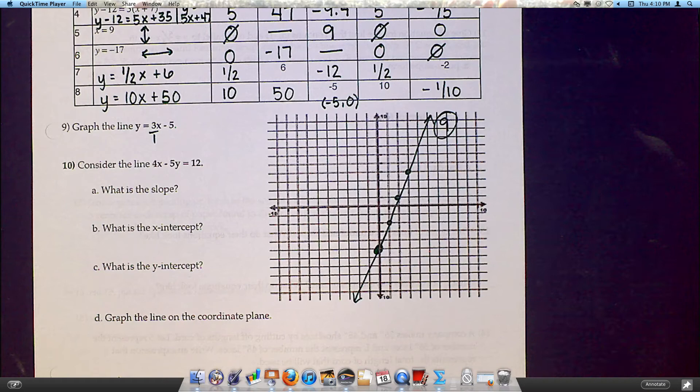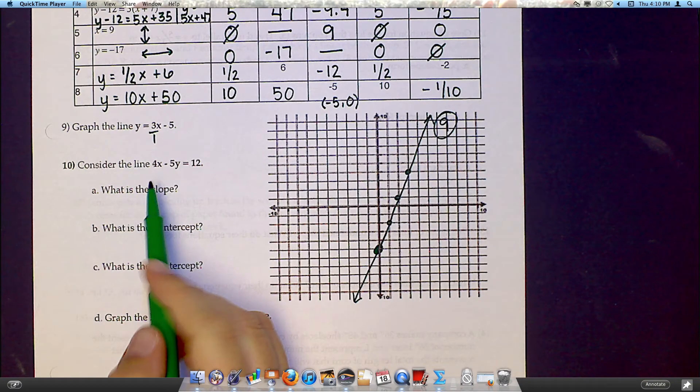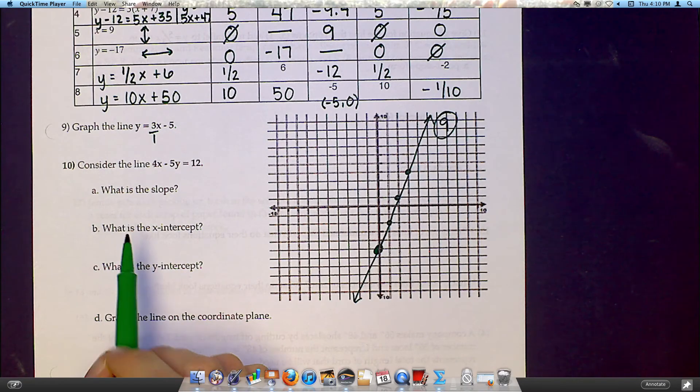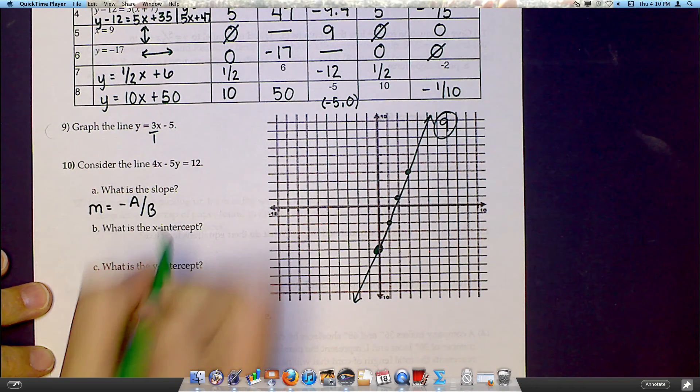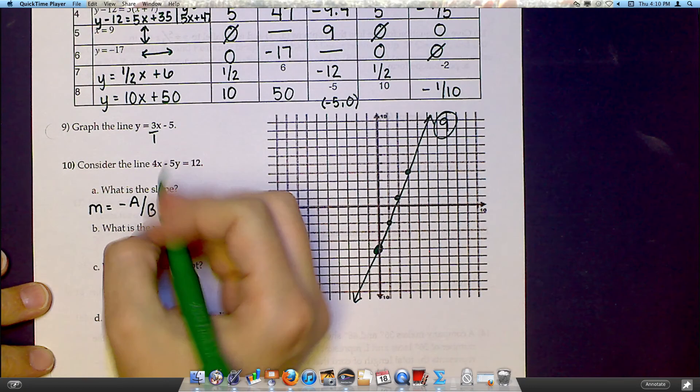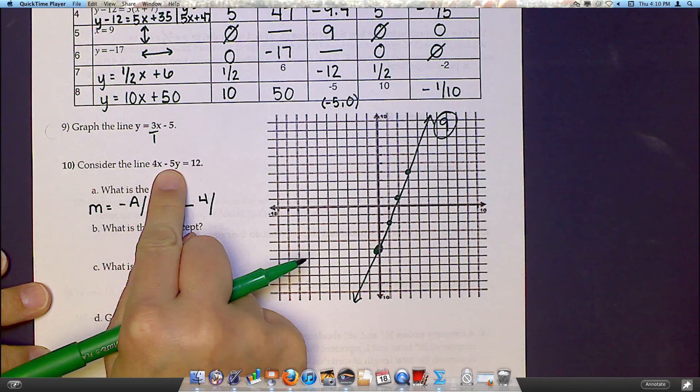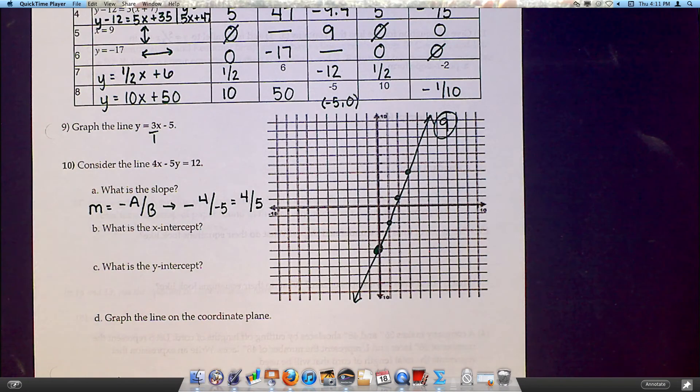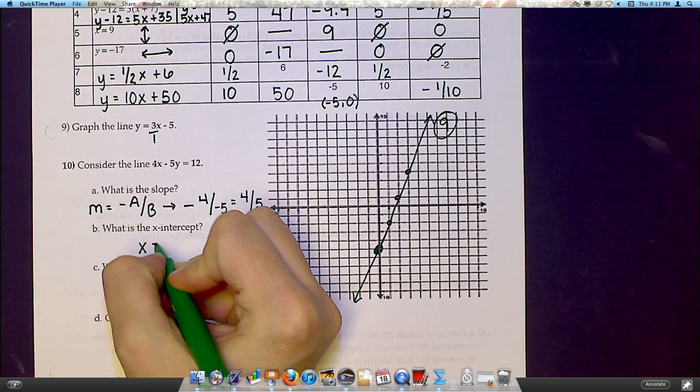Problem 10 is a little more involved. It's giving you this line, and it says what's the slope? This equation is not written in slope-intercept form, because y is not by itself. It's written in standard form. And in standard form, slope is equal to negative a over b. Remember that. So that means I'm going to do negative, and then 4 over, my b value is negative 5, which means my slope is actually 4 fifths. The x-intercept is when I cancel out the y, so that would give me 4x equals 12. In other words, the x-intercept is 3.